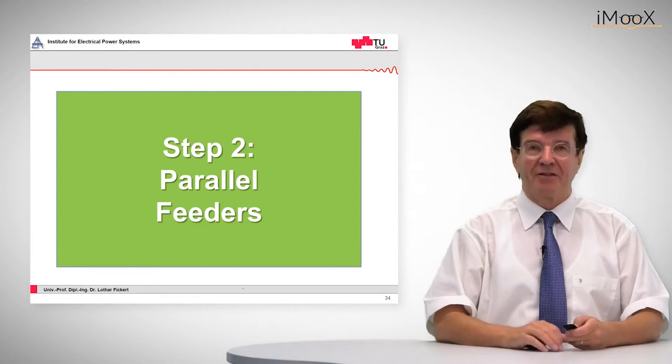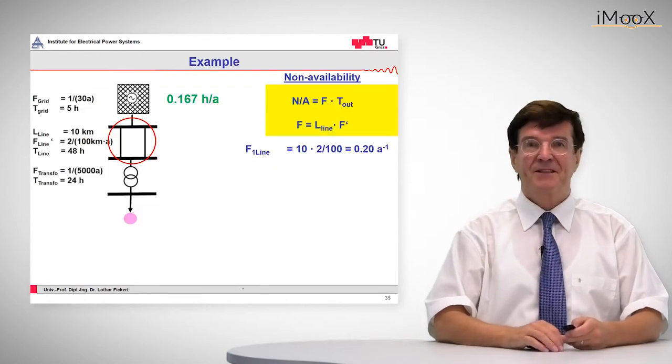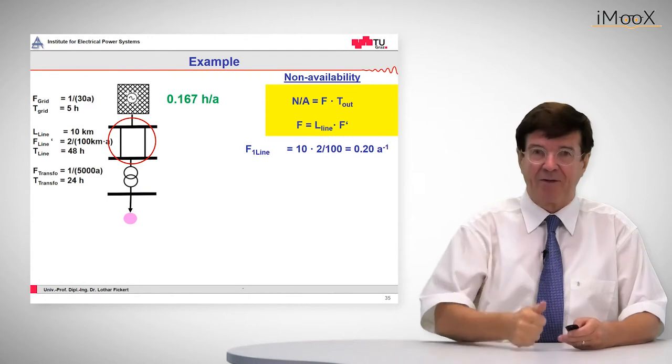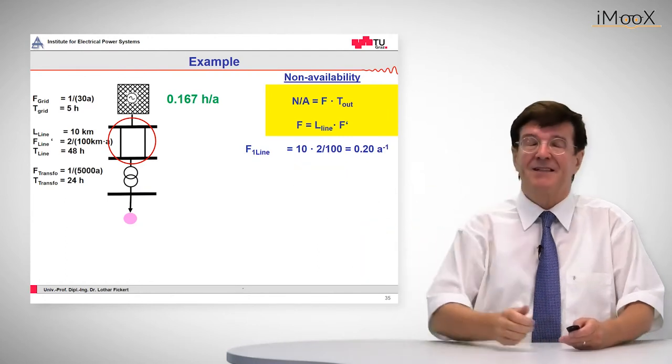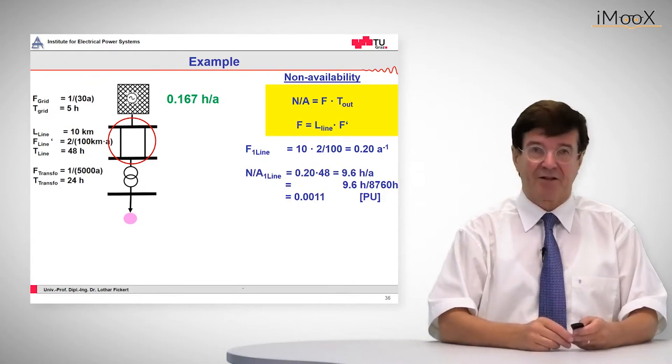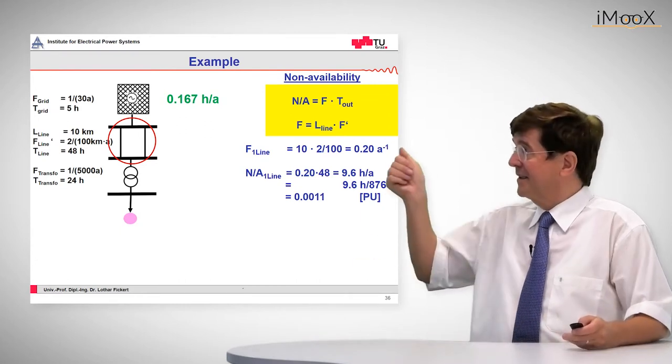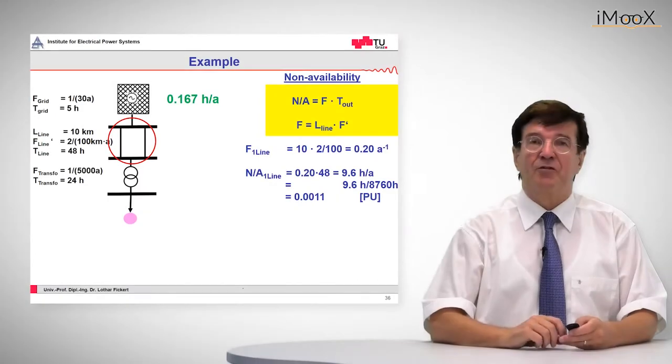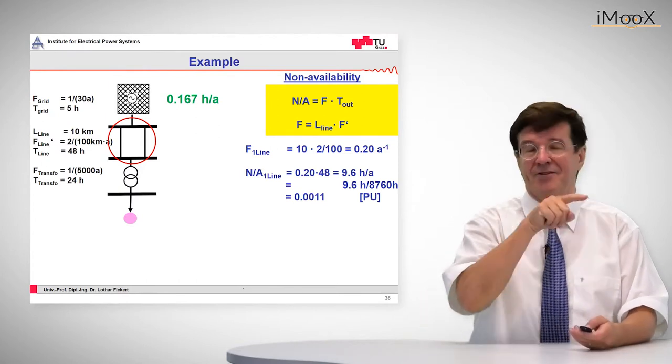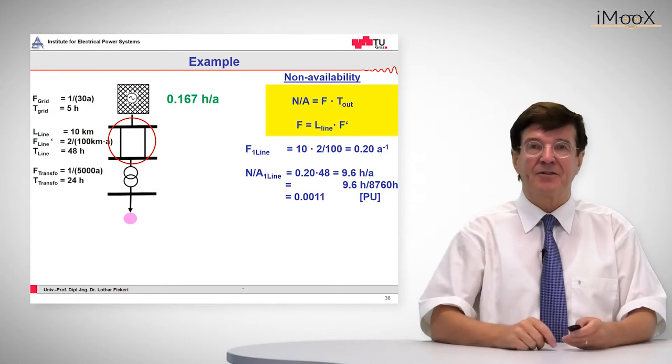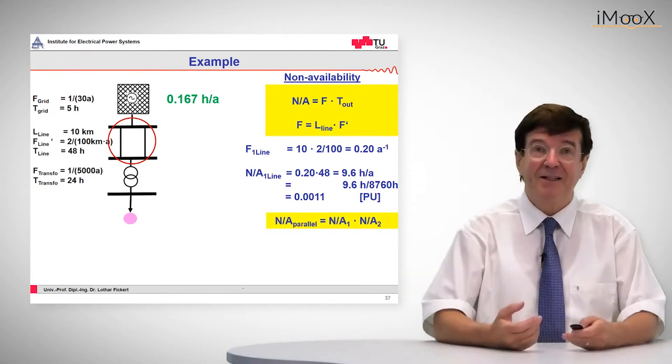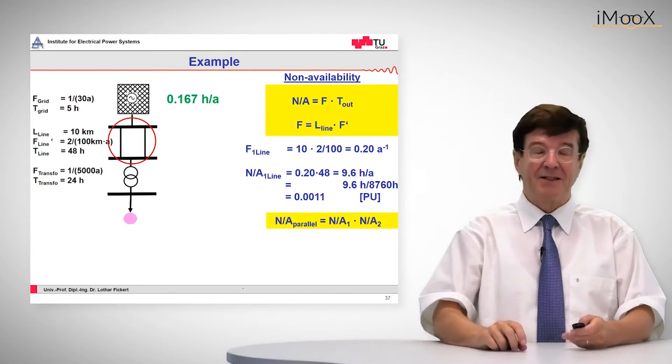The next step is to determine the non-availability of the parallel feeders. The non-availability of feeder 1 is 0.20 per year times the average time, which comes out as 9.6 hours per year. For a specific reason, I turn this into a per unit expression by converting one year into 8,760 hours, arriving at 0.011. The reason is we have to multiply the non-availability of line 1 with line 2, which is conveniently done using per unit quantities.